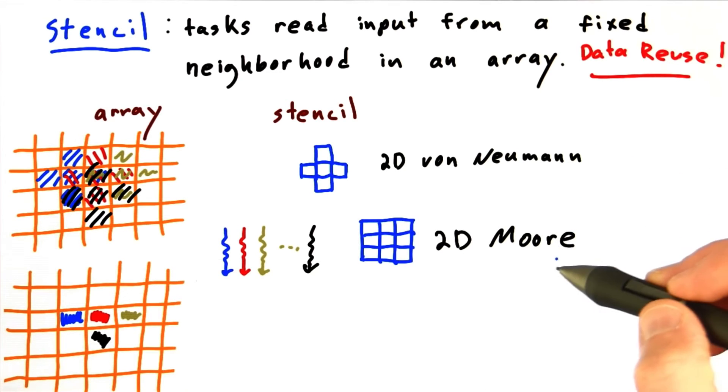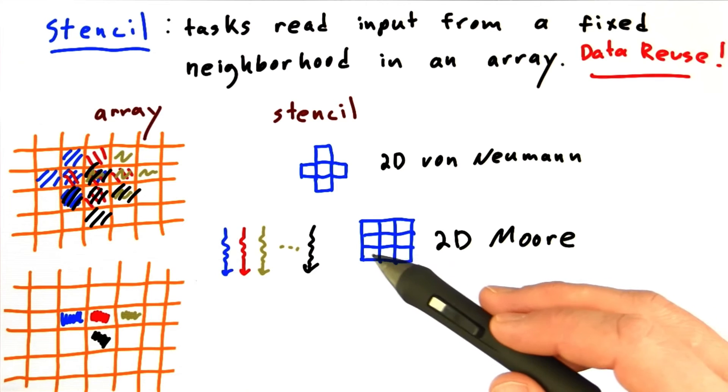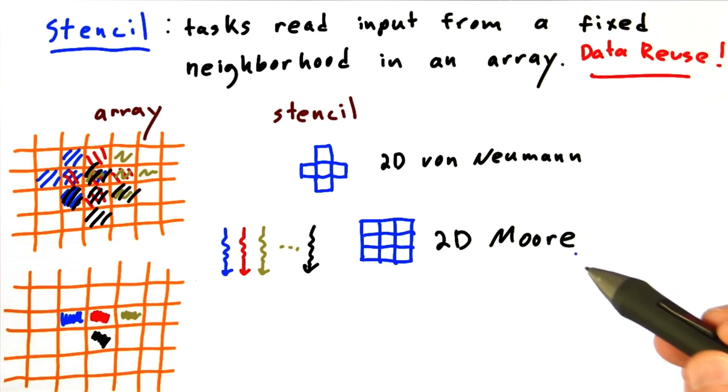Now there are other common stencil patterns. For example, you might read from all of the neighboring elements, including the diagonal elements, and that would be called a 2D Moore pattern.